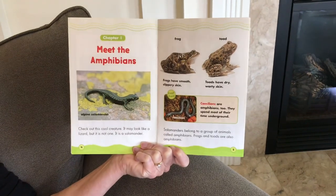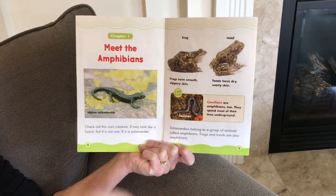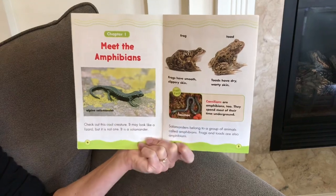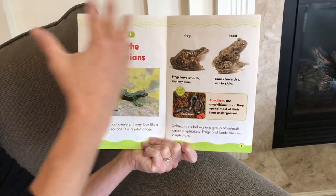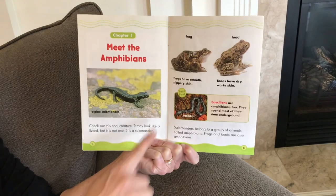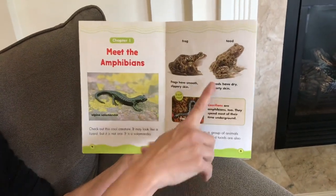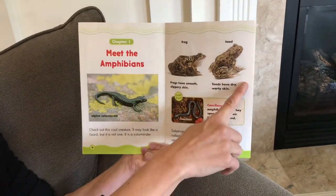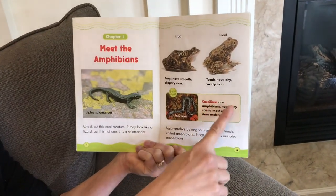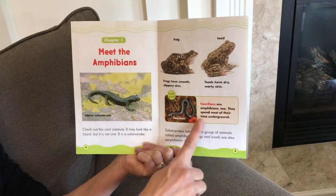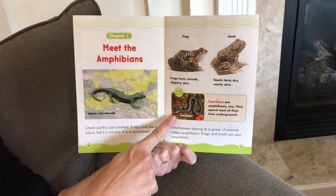This time do you also see captions? Yes, you're right — here, here, and here. That's when we have another sentence on the pictures that tells even more about what's happening. Here it says frogs have smooth slippery skin. Toads have dry warty skin. And Sicilians are amphibians too. They spend most of their time underground.